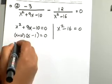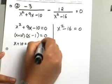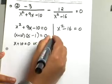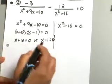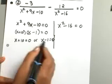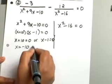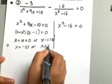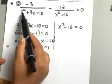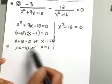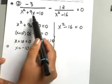Take each one of these factors and set it equal to zero. When you solve each sub-equation, you end up with x equals negative 10 or x equals 1. This tells us that when x equals negative 10 or 1, this denominator will equal zero.